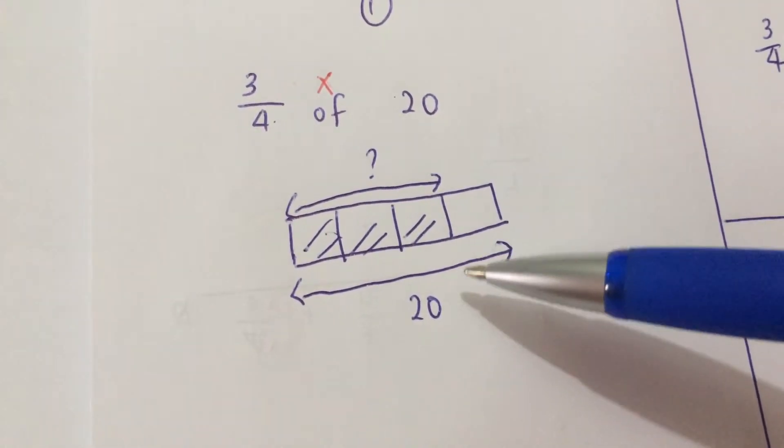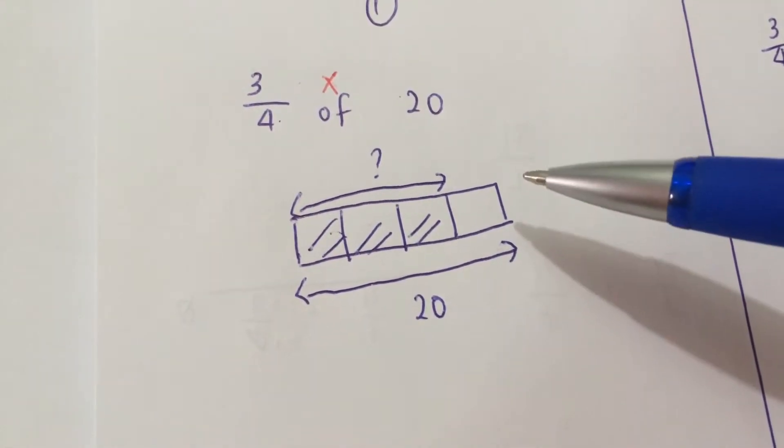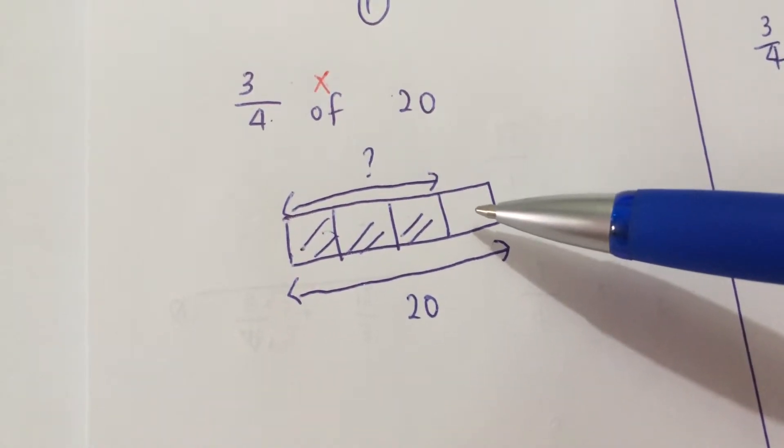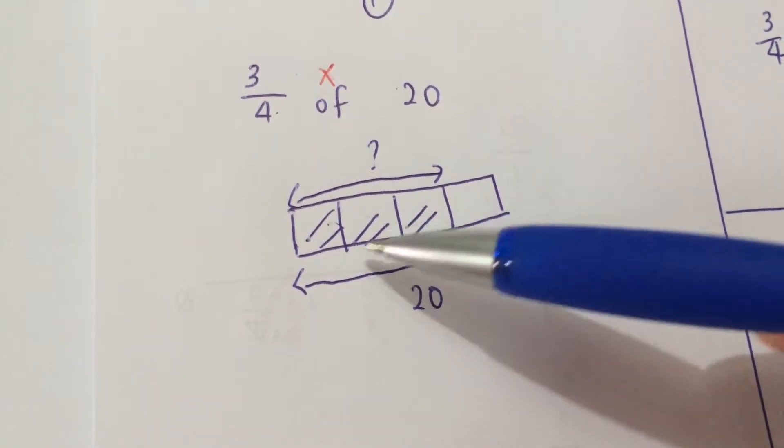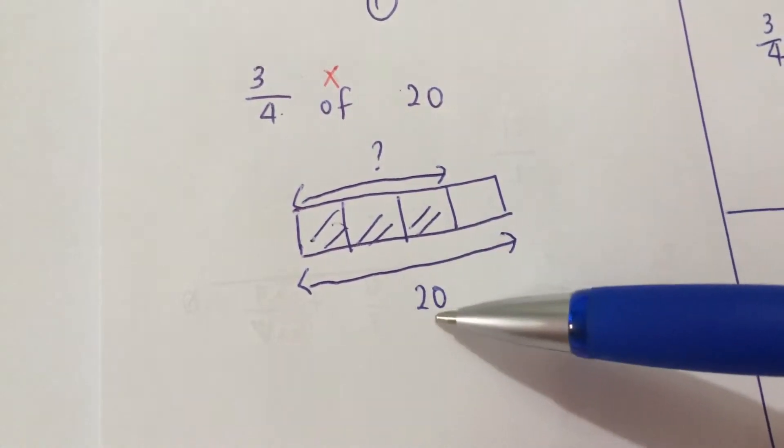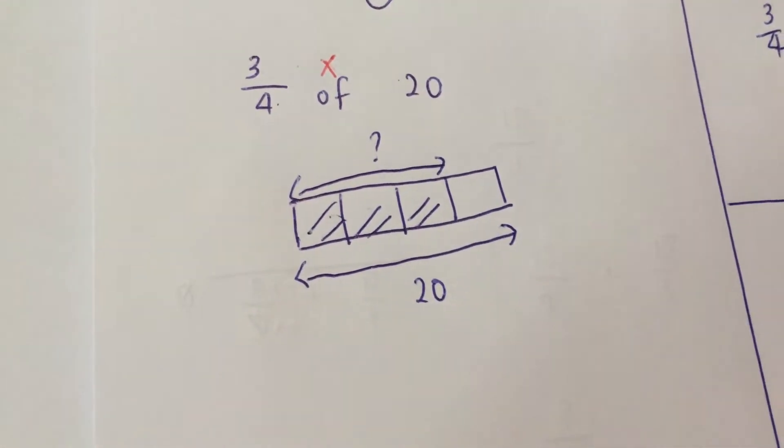It's very important for you to label your model after you have drawn it, because boxes will not tell you any information. Whereas, if you draw your model and you label, it will actually give you more information.